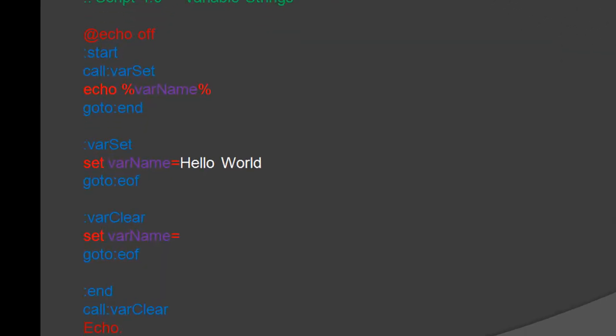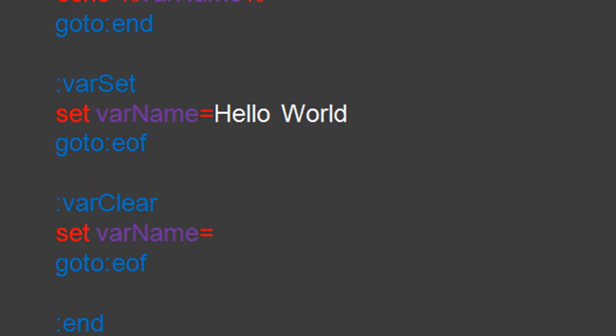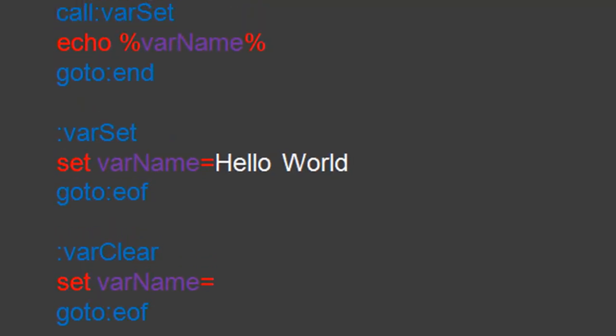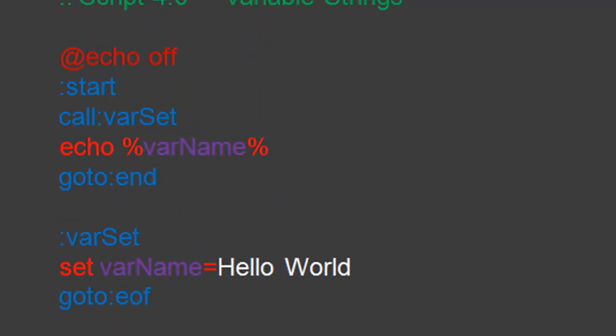In script 4.0 you can see we set our variable varName in the varSet function and cleared our variable in the varClear function. We then echoed the variable's data, hello world, to the console window in the start label.